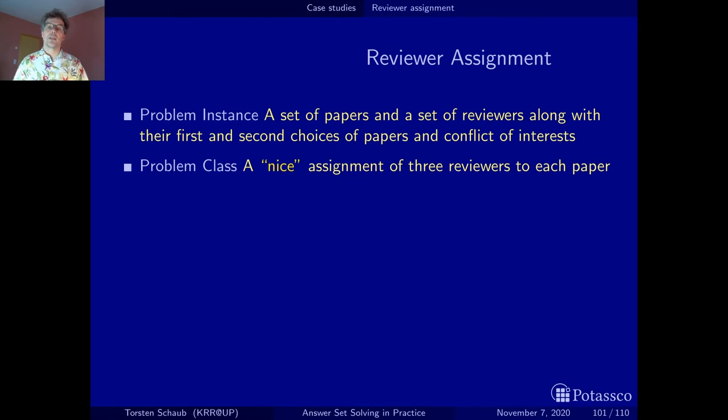Before a conference takes place, the program chairs, the guys that are responsible for the scientific program of a conference, have to recruit reviewers. The task of these reviewers is to write reviews about the papers that are going to be submitted later on to the conference. Normally, each paper receives three reviews. You can imagine that this is quite an evolved process.